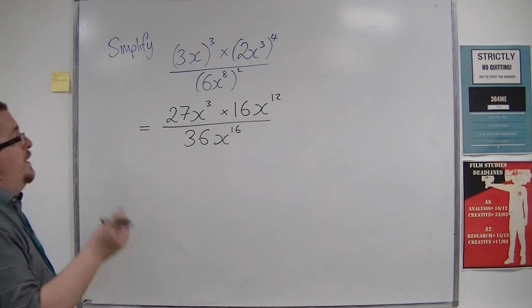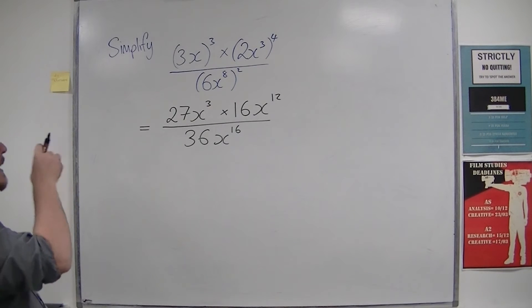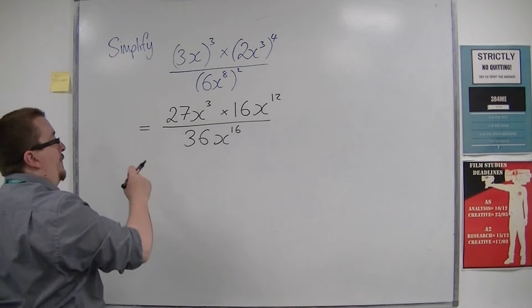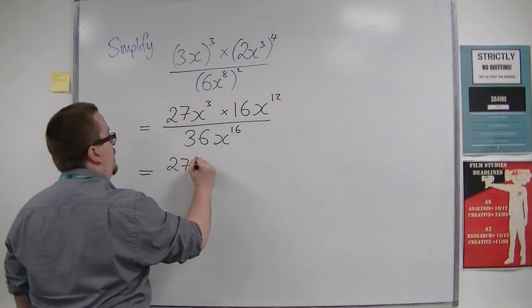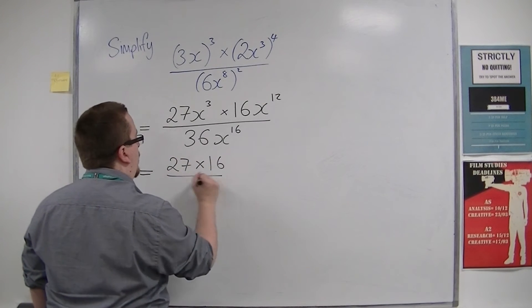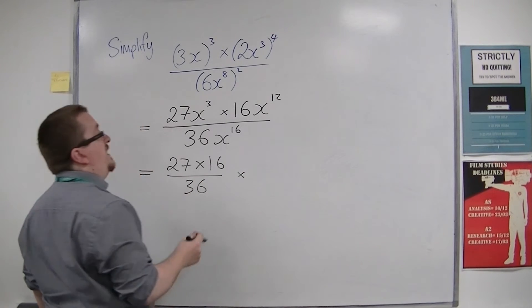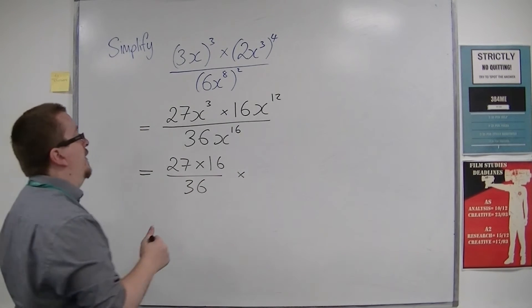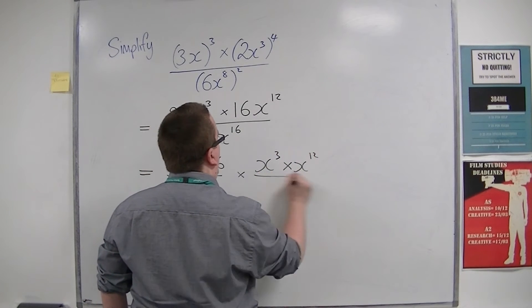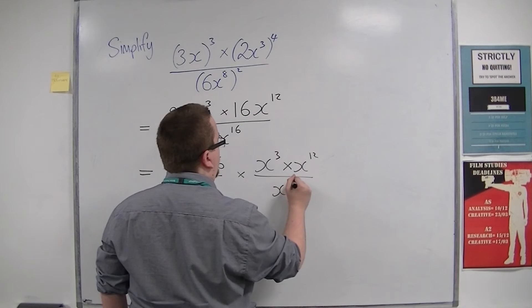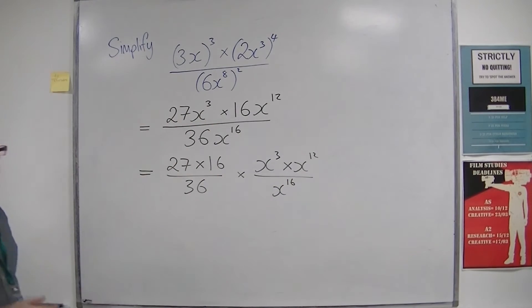So if we just deal with the numbers on one side, so 27 times 16 over 36 on one side, and we deal with the x's on the other, so x cubed times x to the 12 over x to the 16. We're going to simplify each of these pieces.